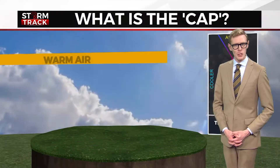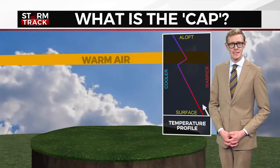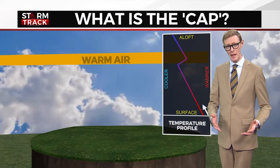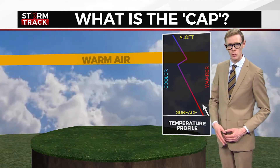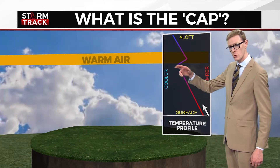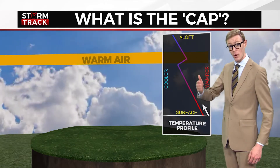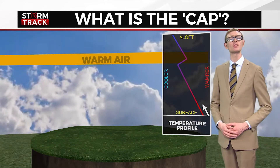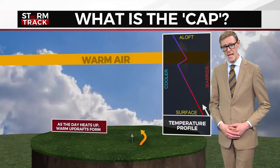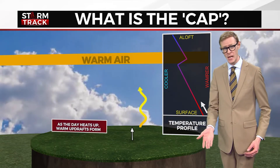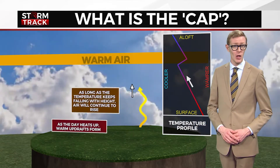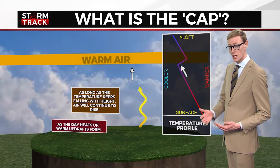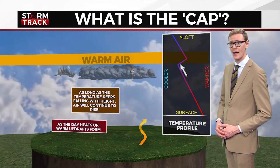So, what is it? It's all about how the temperature changes with height. In general, air is the warmest at the surface and gradually becomes cooler the higher up you go. Air rises as long as the surrounding air is cooler. As the day heats up, rising air creates warm updrafts. As long as the temperature keeps falling with height, air will continue to rise.